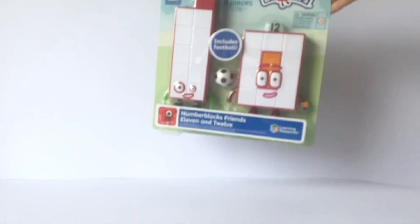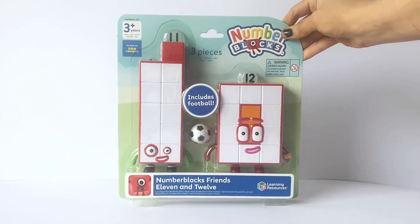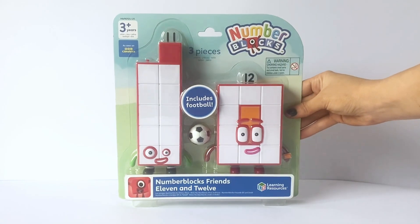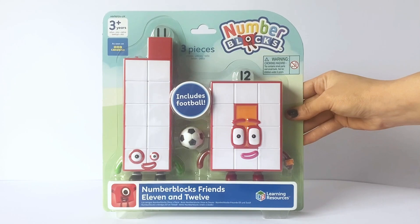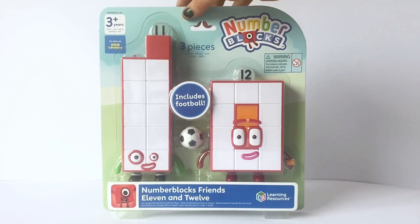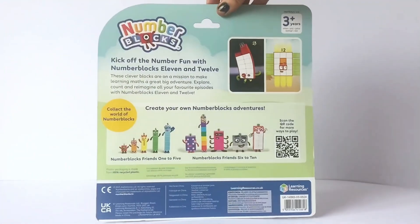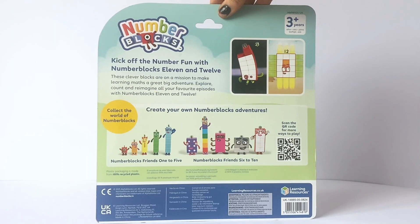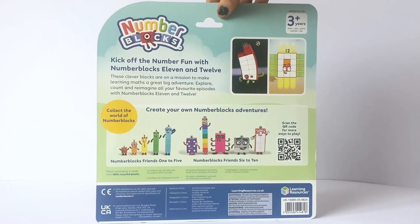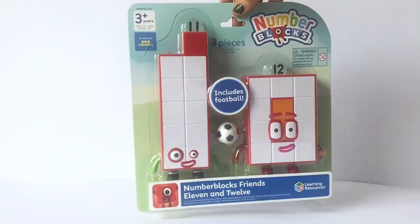So here is the first new toy. It's NumberBlocks NumberBlock friends 11 and 12 action figures. You can see that NumberBlock 11 comes with a football accessory. On the back, it says kick off the Number Fun with NumberBlocks 11 and 12. NumberBlocks 1 to 5 and 6 to 10 are sold separately.